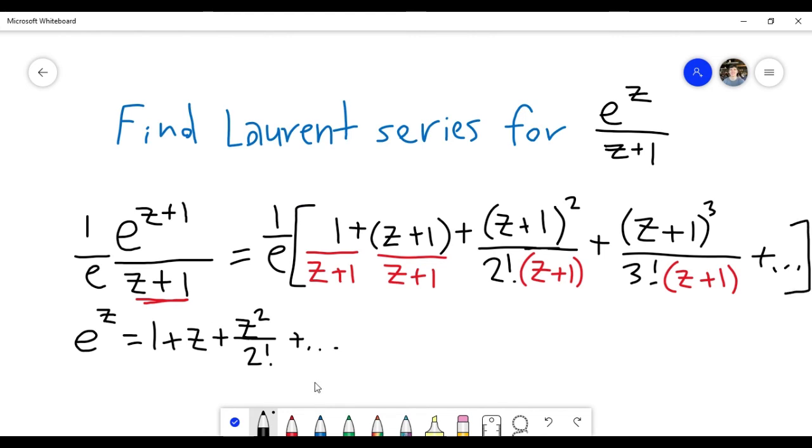And then we have a bunch of cancellation that happens. I have z plus 1 over z plus 1, so that's just going to be 1. Here I have z plus 1 squared, and then I'm dividing. So this is going to go away. That exponent is going to cancel.